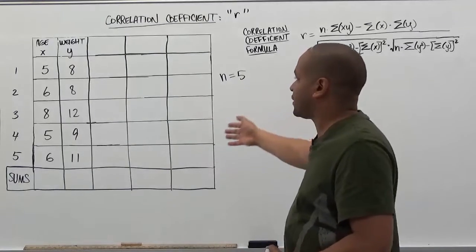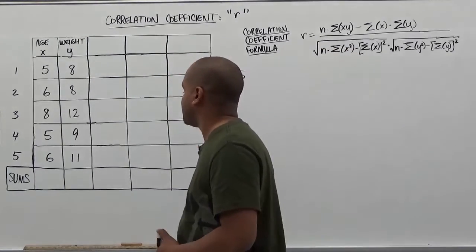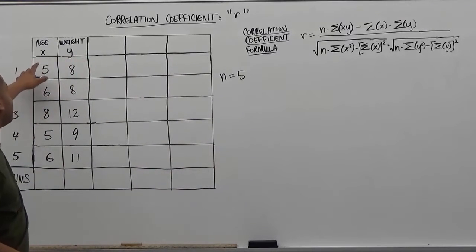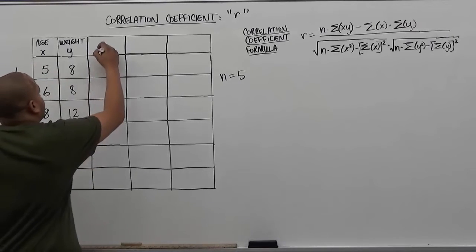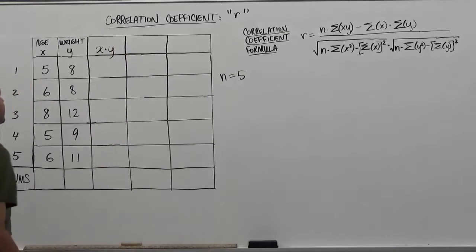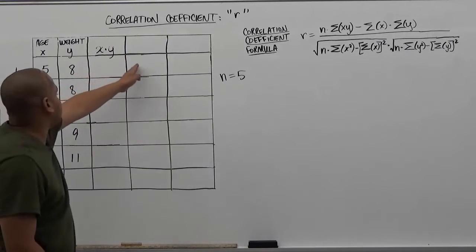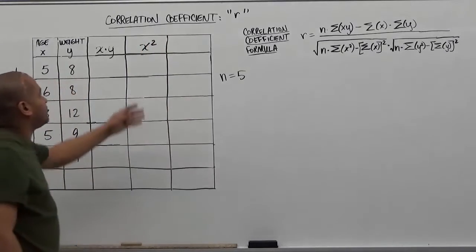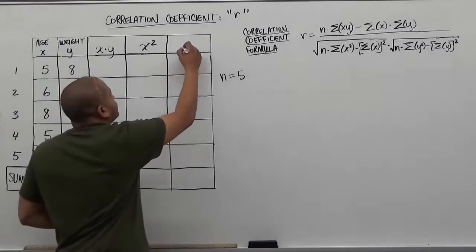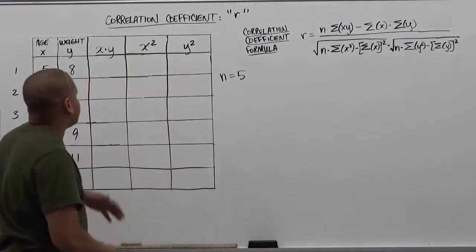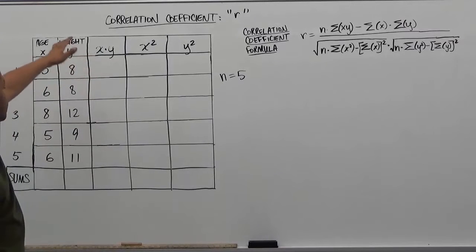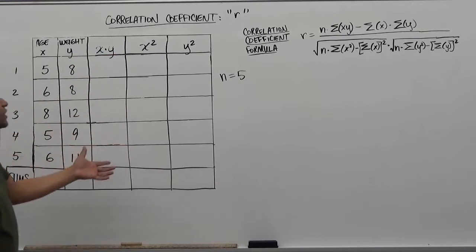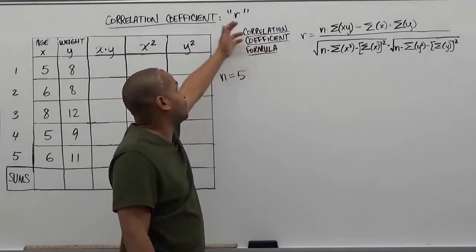Once we have that determined, we're going to finish the chart here. To complete the correlation coefficient, we're going to need a couple other pieces of data. The first piece of data we're going to need is the product of x and y. The next column is going to be x squared. Our last and final column is going to be the value of y squared. We want to perform the operations that the column header indicates, fill up the chart, then take the sum of every column, and use those sums in the correlation coefficient formula.